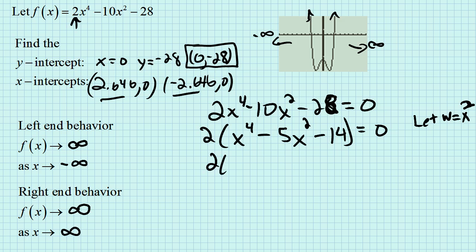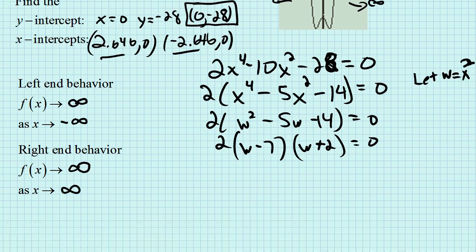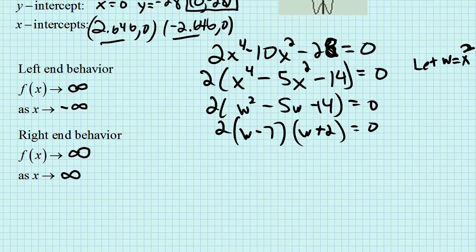Then we'd have 2 times w squared minus 5w minus 14. We could factor that to be w minus 7 and w plus 2. Then we can sub back in the fact that w was x squared, and we'd have the following factoring of that polynomial: x squared minus 7 and x squared plus 2.